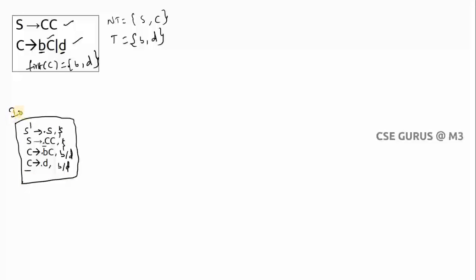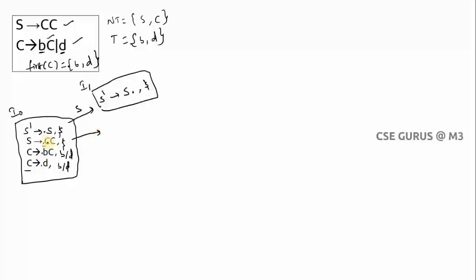After completing lookaheads, group all productions into I0. From I0, scan each symbol. The first symbol to scan is S. Scanning S: S' → S• with lookahead $. There is no symbol after the dot and no dot-S production, so no further expansion. This becomes I1.